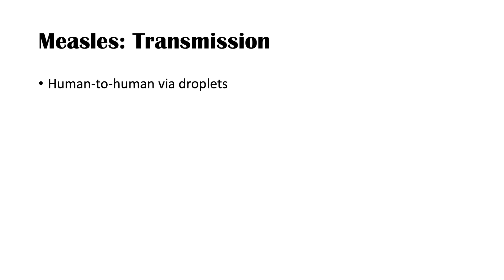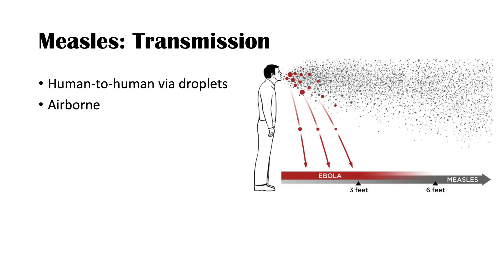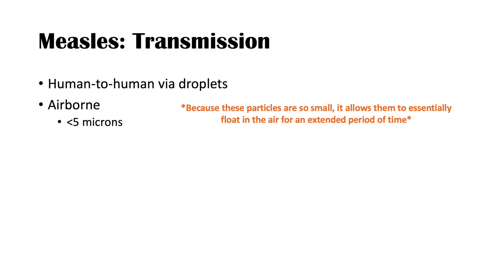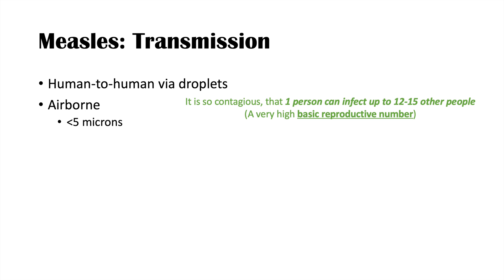The measles virus is transmitted by a couple of different mechanisms. One is through human-to-human contact via respiratory droplets. Another way it can be transmitted is through airborne mechanisms, and this is really where it becomes very contagious. The particles are less than five microns, so they're very hard to filter, and the virus can remain in the air for up to two hours.